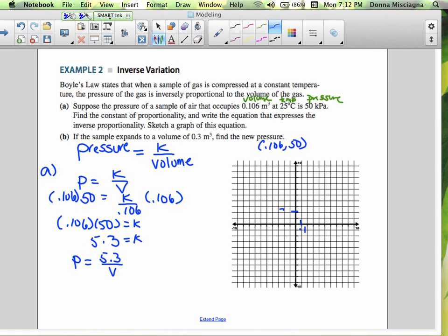So, each box is 10. That would be 20. Alright. And so, we've got one point there. We know 0.106 is about 0.1 and 50. So, 20, 40, 50.